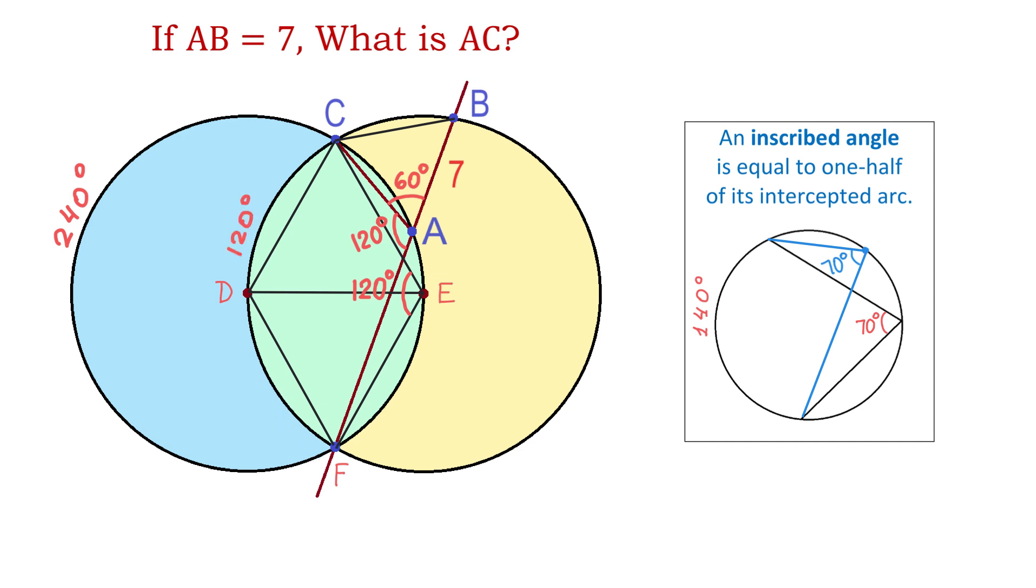And now, let's take a look at the angle CBF. This angle has the vertex on the yellow circle, and it crosses the yellow circle at the points C and F. Then, its intercepted arc is this one, and it measures 120 degrees. This means that this angle will be half of 120, which is 60 degrees.